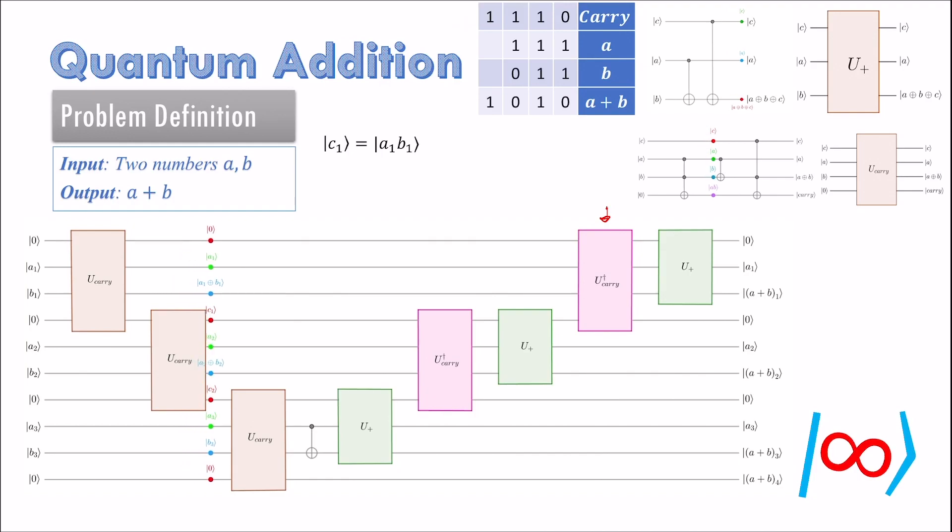The carryover bit computed by the first carry gate is fed as previous carryover bit for the second carry gate. Now this carry gate computes carryover bit using the next bit pairs of the input. Again this new carryover bit is set back to 0 after it has served its purpose.